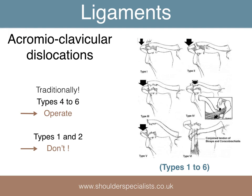Acromioclavicular joint dislocations, or separations as they are known elsewhere, are usually classified according to the progressively worsening damage — first to the acromioclavicular ligaments, then the coracoclavicular ligaments. Traditionally, we have tended to treat types 4 to 6, where the coracoclavicular ligaments are torn, operatively. More recently, there is a trend to consider even the higher-grade injuries for a trial of non-operative management, with those patients who fail to recover reasonably rapidly undergoing delayed surgery to stabilise the joint.